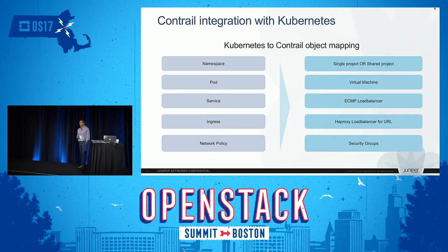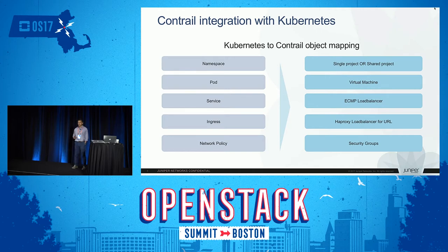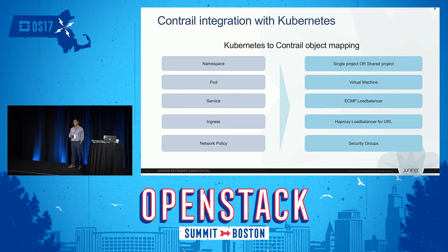Now, in terms of resource mapping, what you see on the left are all the resources that exist in Kubernetes. An important thing is that there's no notion of a network resource in Kubernetes. Fundamentally, when you deploy a Kubernetes cluster it has three IP ranges: one for allocating to pods, one for services, and one for public access. We've had to figure out different mechanisms to create networks underneath a Kubernetes cluster.